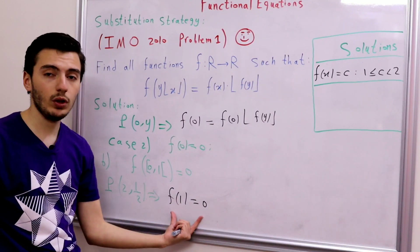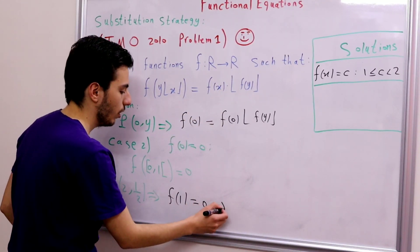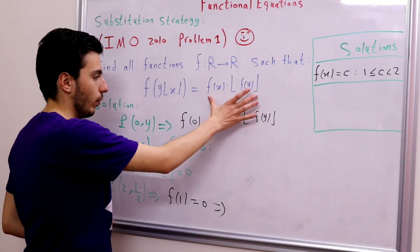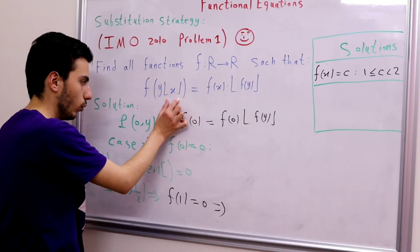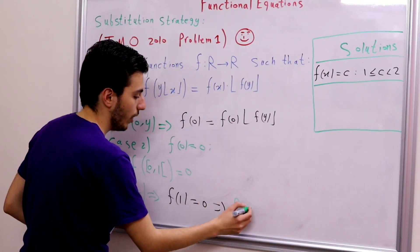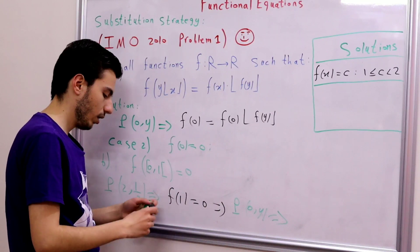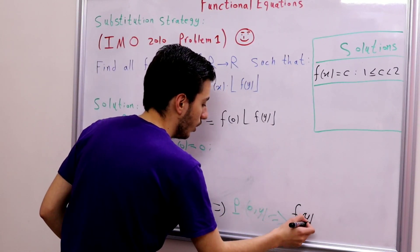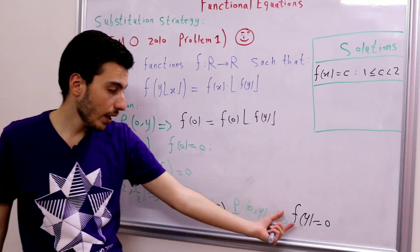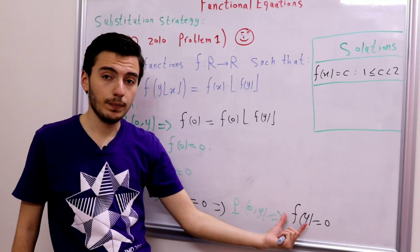Since f(1) = 0, substituting x = 1 into the original equation gives f(y) · ⌊1⌋ = f(1) · ⌊f(y)⌋, i.e., f(y) · 1 = 0 · ⌊f(y)⌋ = 0. Therefore f(y) = 0 for all y. So in this case our function is identically 0, which we verify is indeed a valid solution.